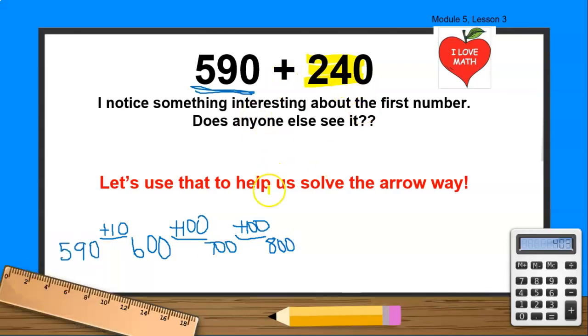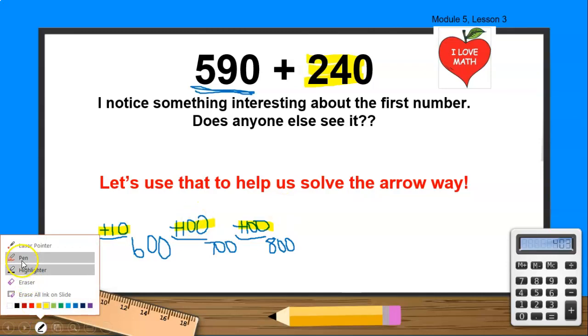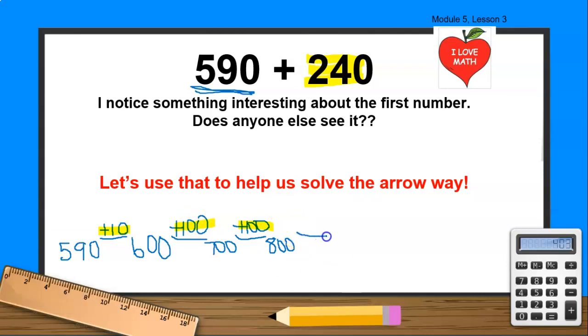Am I already at 240? Nope. I have 100, and I have another 100 that gives me 200, and I have 10. So that gives me 210. How many more do I need to get to 240? Yes, boys and girls. I need 30 more. Keep thinking. So I make my little line that represents the arrow. 800 plus 30. Because 800 plus 30 gives me, yes, 830.